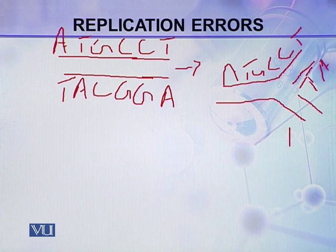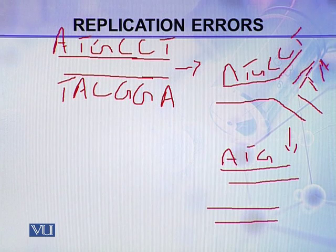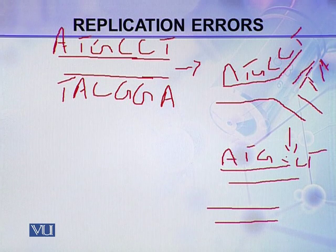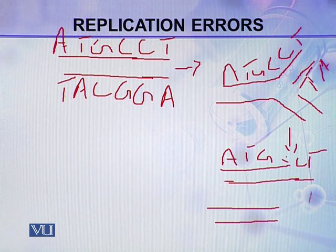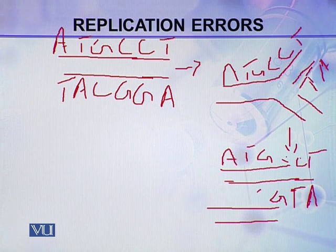After replication, two new molecules will be formed. These two molecules will have the sequence A, T, G, C, C, T — this is the parental strand. In the other strand there is misincorporation: in front of T is A, but in front of C, T has been incorporated, which is actually misincorporation. The rest is correct: G, C, A, and T.